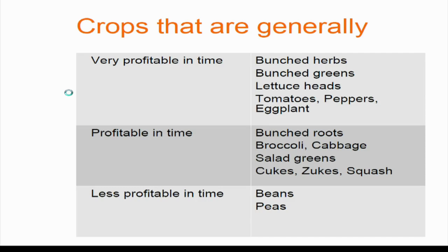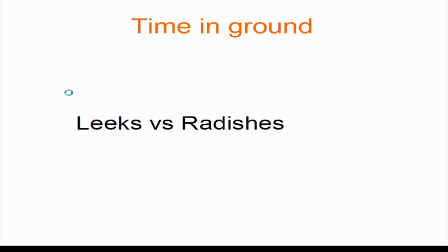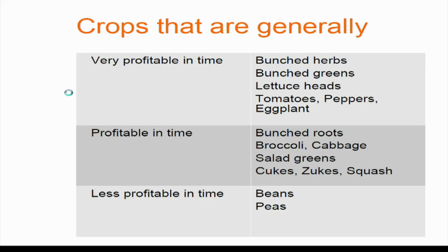The crops generally most profitable in time are bunch herbs and bunch greens — you can pull or cut off a plant, throw an elastic on, do a quick dunk, maybe 10 bunches at a time. Lettuce heads with a sharp knife — you can just work through a bed. Tomatoes and eggplants can be very quick to harvest. Peppers, if you can get $1 to $2.50 each, are phenomenally profitable — you can be harvesting at $500 to $1,500 an hour. Bunched roots like carrots and beets are more steps — getting them out of the ground, elastic on, then cleaning, which is a big factor. What unit are you selling by — pound or piece — matters a lot for the calculation.